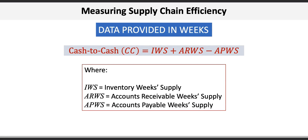So our cash-to-cash conversion cycle here is going to be equal to IWS plus ARWS minus APWS, where IWS is inventory week supply, ARWS is accounts receivable week supply, and APWS is the accounts payable week supply.